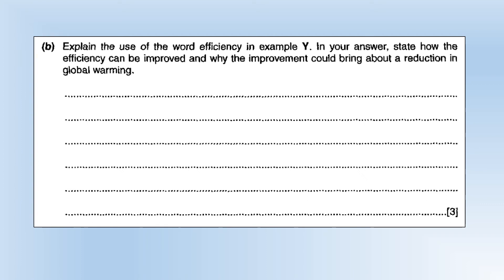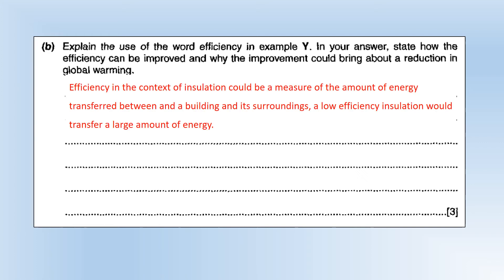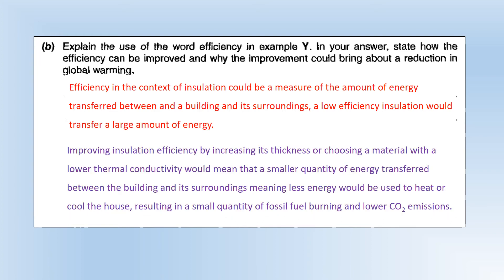In the context of insulation efficiency, this is a measure of how much energy is transferred between a building and its surroundings. A low efficiency insulation would transfer a large amount of energy to its surroundings. Improving insulation efficiency means smaller quantities of heat energy are transferred — achieved by putting an insulator between walls or in the roof — resulting in less energy used to heat or cool the house and therefore a smaller amount of fossil fuel burned, giving lower CO₂ emissions.